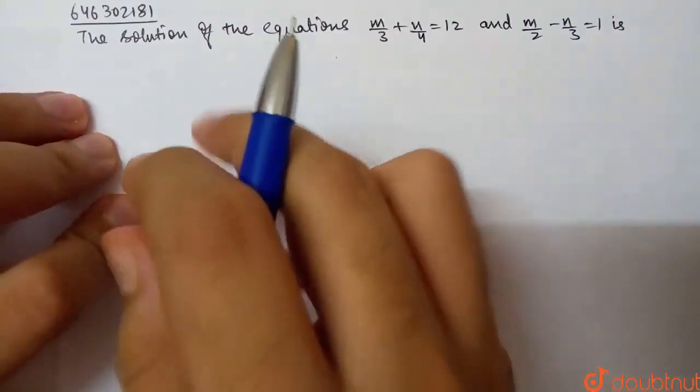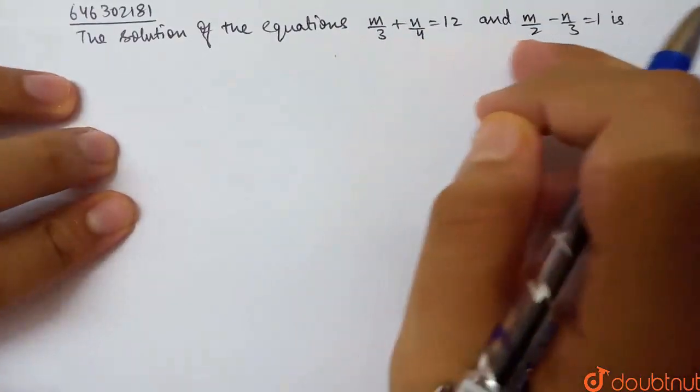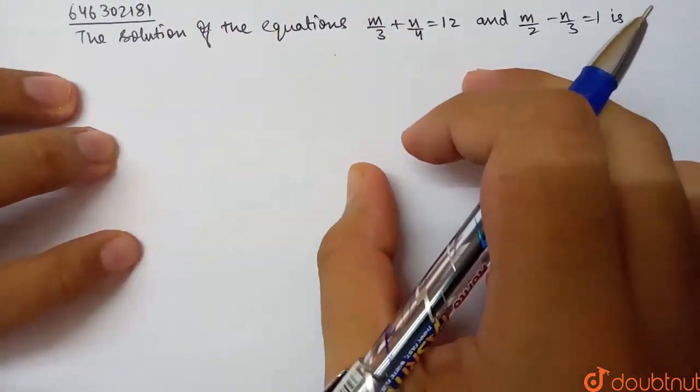The next question is: find the solution of the equations m/3 + n/4 = 12 and m/2 - n/3 = 1.